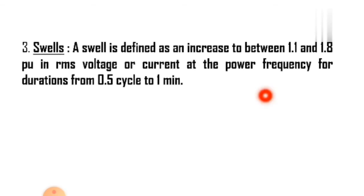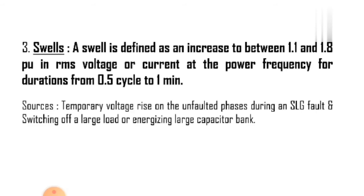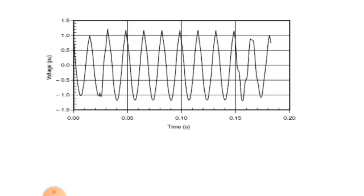The last category is swells. It is defined as an increase to between 1.1 and 1.8 per unit in RMS voltage or current at the power frequency for a duration from 0.5 cycle to 1 minute. As with sags, swells are usually associated with system fault conditions but they are not as common as voltage sags. One way that a swell can occur is from the temporary voltage rise on the unfaulted phases during a single line to ground (SLG) fault. This plot illustrates a voltage swell caused by an SLG fault. Swells can also be caused by switching off a large load or energizing a large capacitor bank.